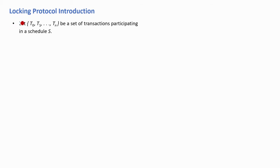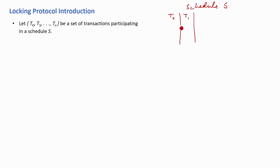In this lecture we will study about locking protocol introduction. Let t0, t1 up to tn be a set of transactions participating in a schedule S. So let's suppose this is schedule S, and here we have transactions t0, t1 up to tn — some number of transactions which participate in a schedule S.